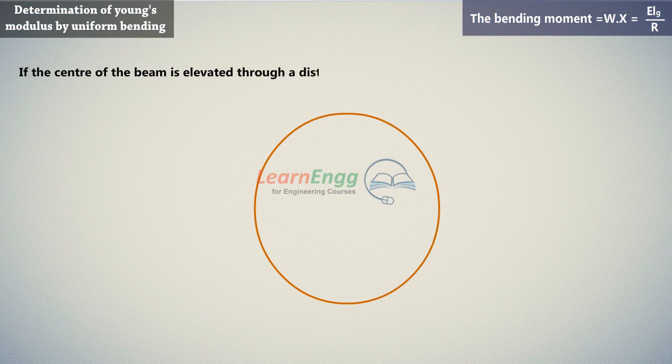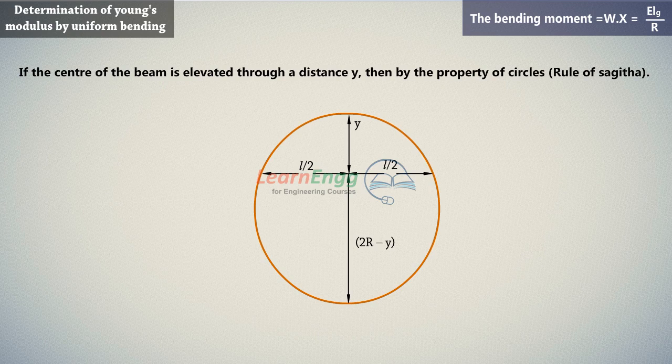If the center of the beam is elevated through a distance Y, then by the property of circles, i.e., rule of Sajita, can be written as shown.